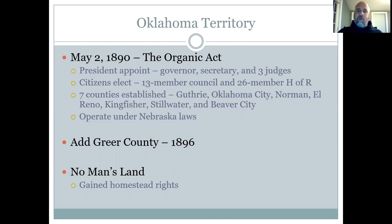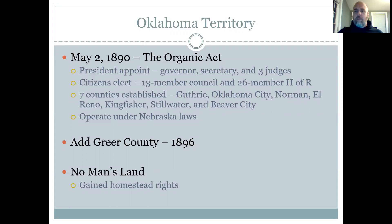This act also established seven counties in Oklahoma Territory: Guthrie, Oklahoma City, Norman, El Reno, Kingfisher, Stillwater, and Beaver City. Since Oklahoma Territory did not have their own laws yet, they would operate under Nebraska laws until they could create their own. Eventually it would work under Oklahoma laws, but originally they acted under Nebraska laws.